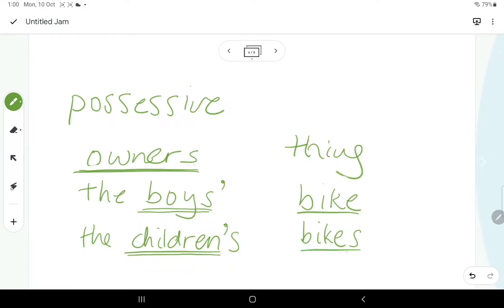It doesn't matter whether the thing they own is plural or singular. All we're interested in is whether the owner is plural or singular. And in each case, we put the apostrophe after the owner.